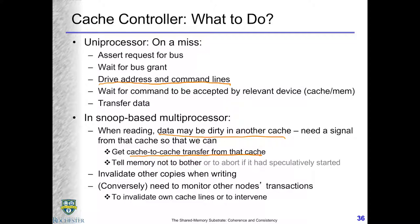We may also have to signal the memory unit not to supply data — it's out of date. Conversely, if I'm writing and it's a miss, I have to invalidate other caches. So the cache controller on a processor needs to: initiate a cache-to-cache transfer or receive data from another cache, and invalidate someone else's data. If you're on the receiving side sitting on the bus, someone may signal you to invalidate your cache line.